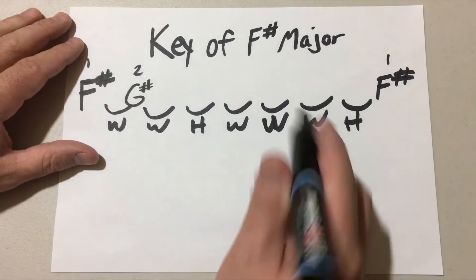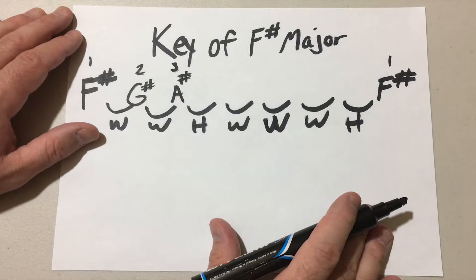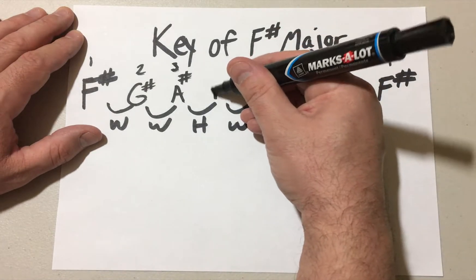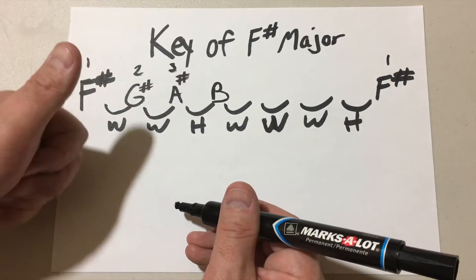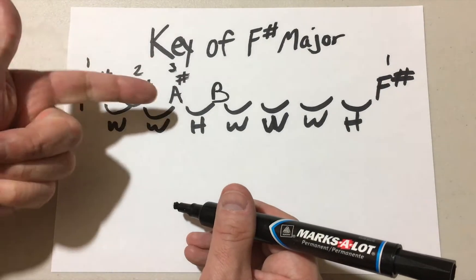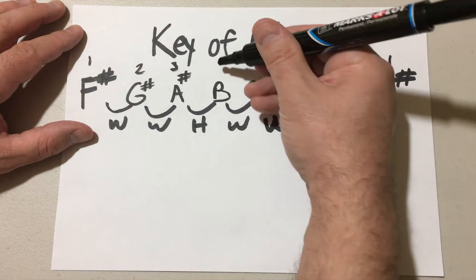G sharp to A, A to A sharp, that's the third. A half step from A sharp, it's gonna give us B. A whole step from B...